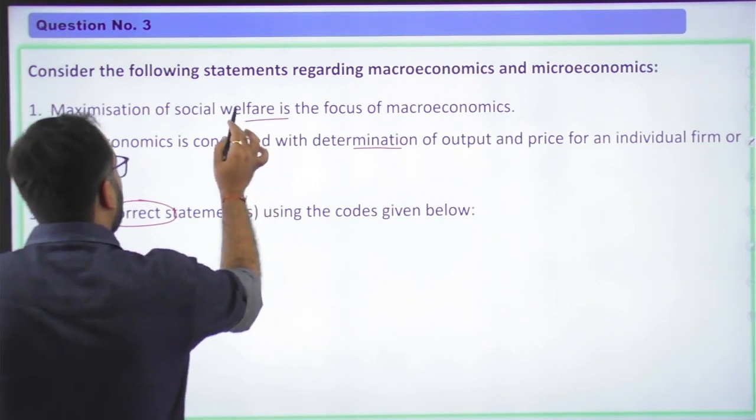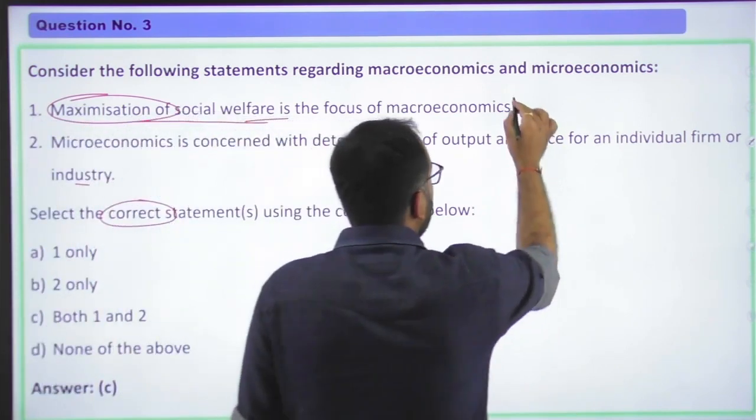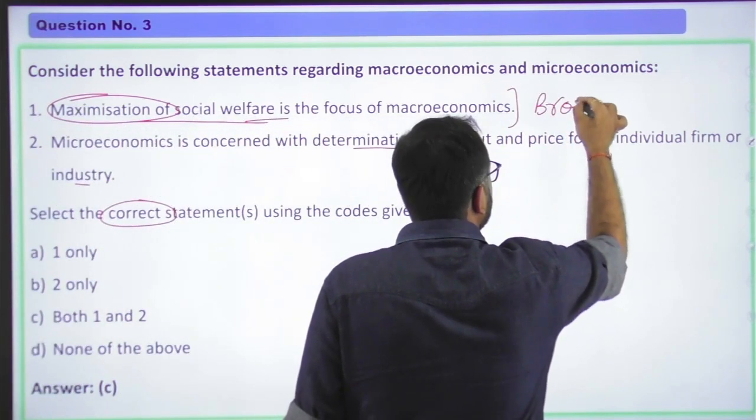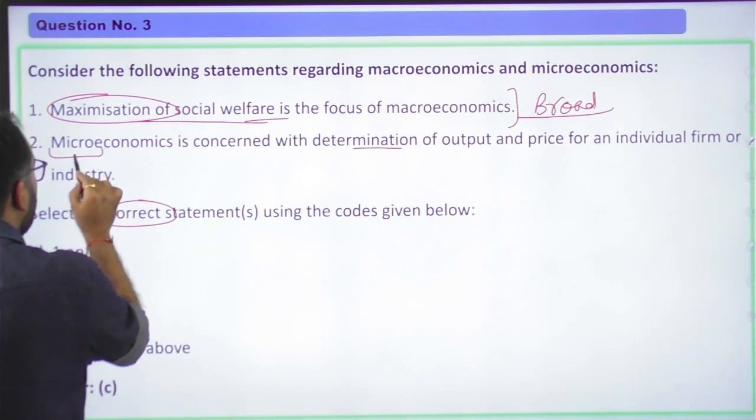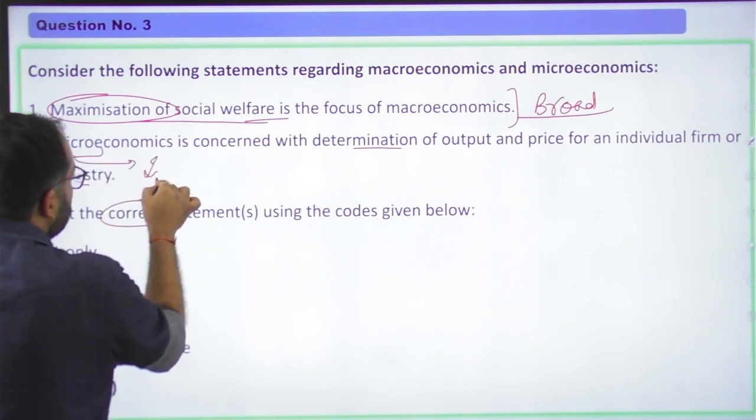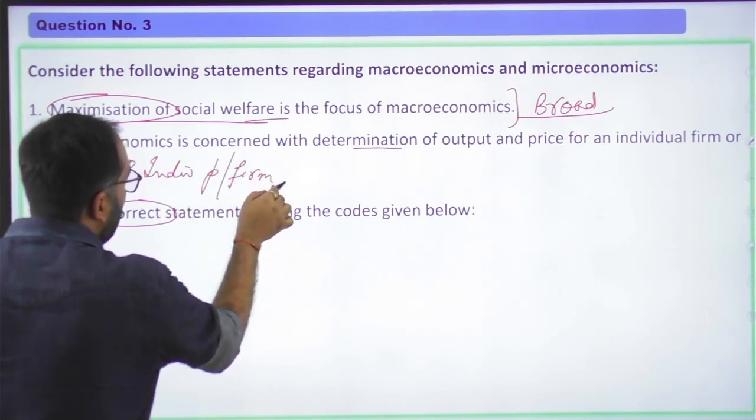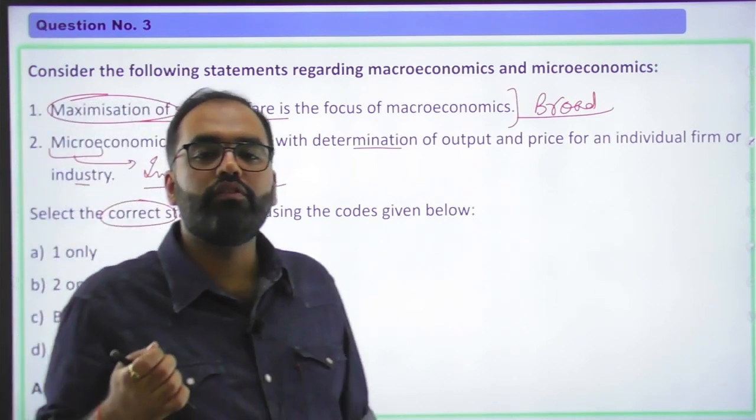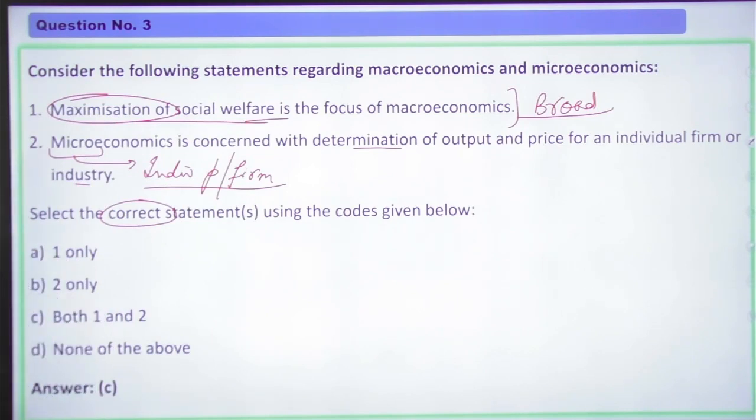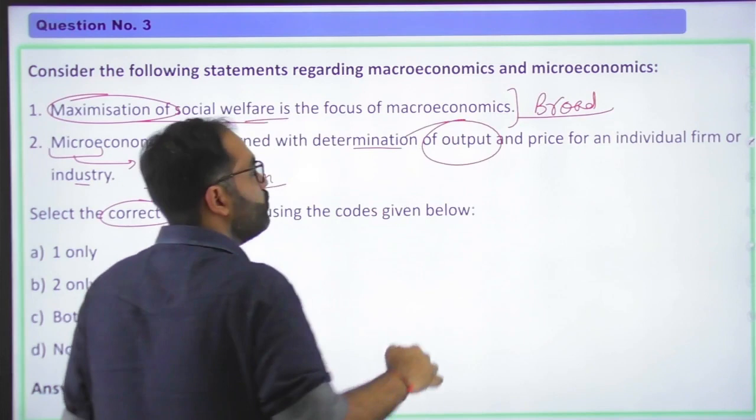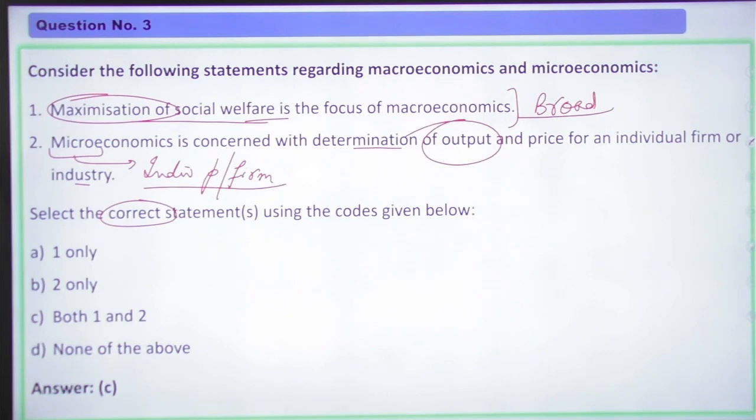The two statements here are correct. When we talk about macroeconomics, macroeconomics wants to maximize social welfare. It is very, very broader outlook as compared to microeconomics. Microeconomics deals with an individual person or with an individual firm or an individual entity. That is the basic distinction between microeconomics and macroeconomics.